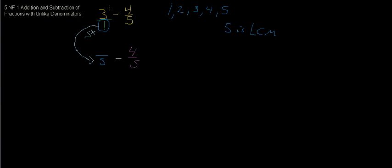If we do the same thing with 3, 3 times 5 equals 15, so 3 is equivalent to 15/5. Now we just need to do the subtraction: 15 minus 4 over 5. 15 minus 4 is 11, so that gives us 11/5.